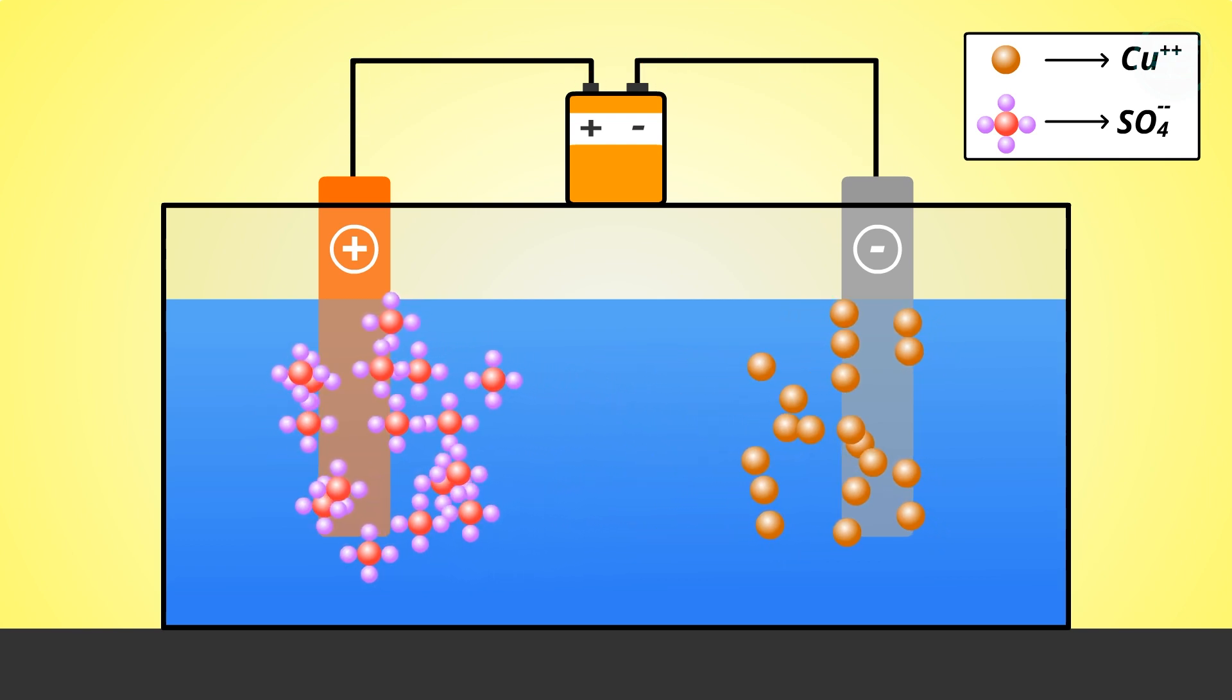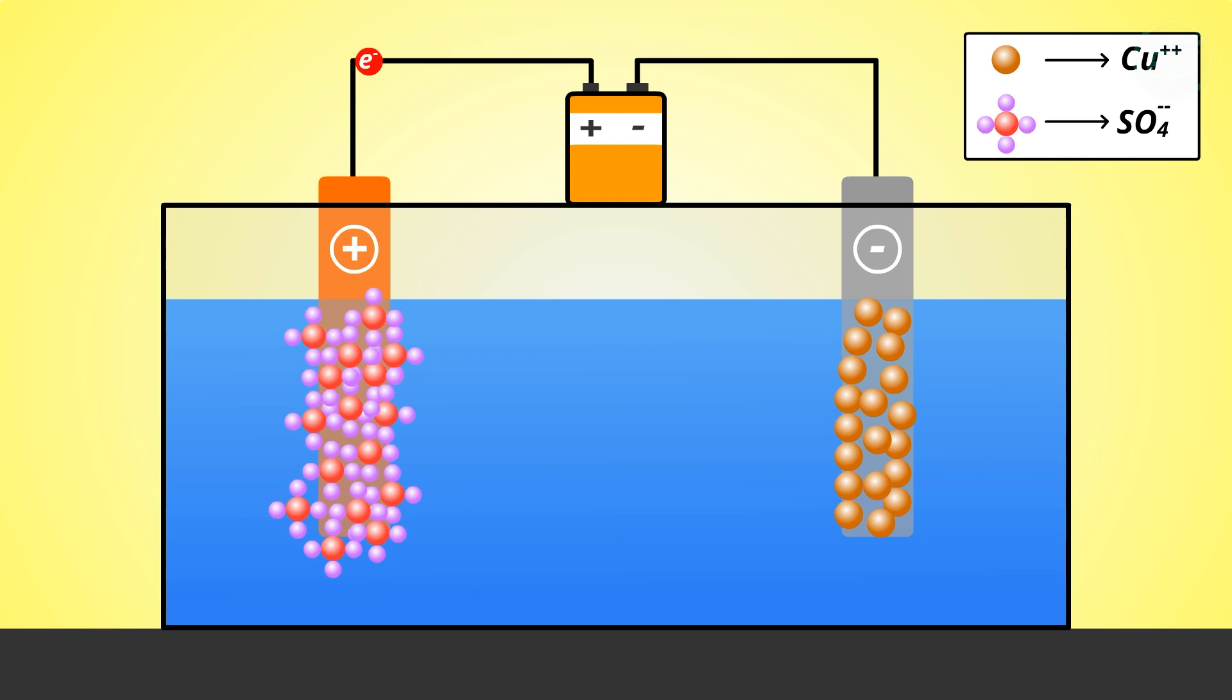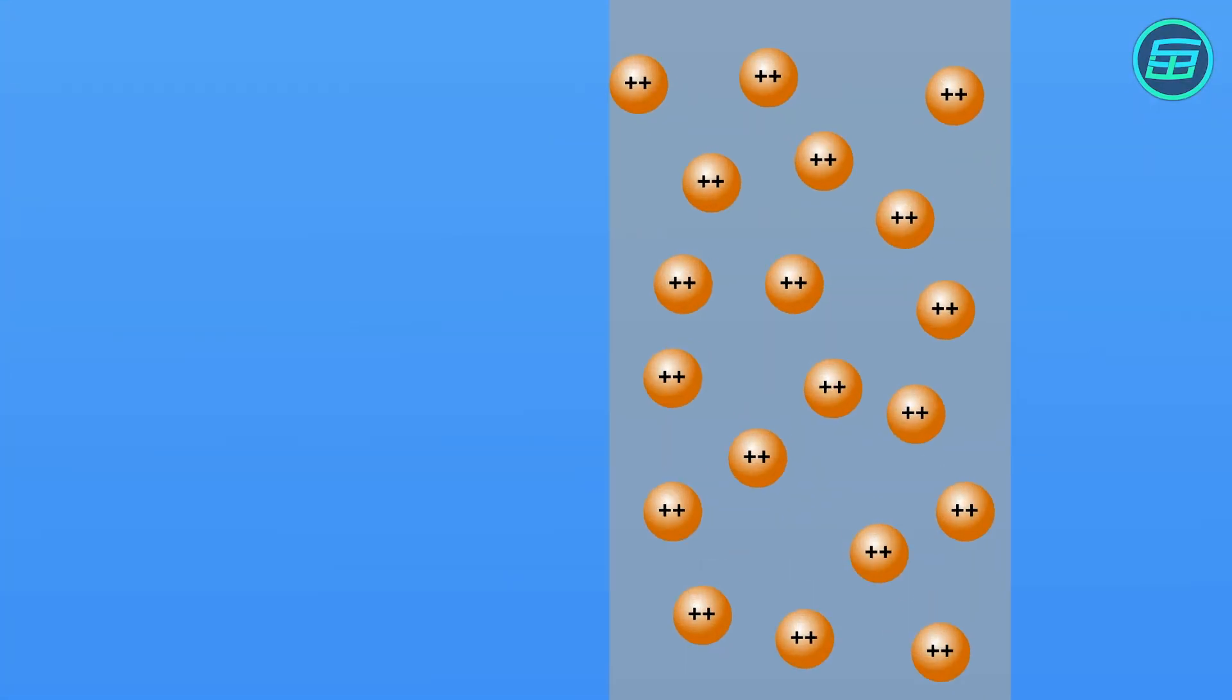The copper ions have migrated to the cathode, gain electrons, and become neutral copper atoms. Metal atoms typically become solid when in their neutral form. Therefore, copper atoms which gain electrons become solid and build up on the cathode.